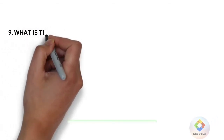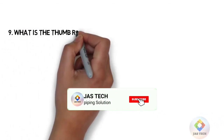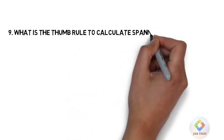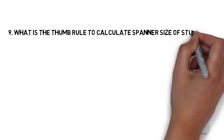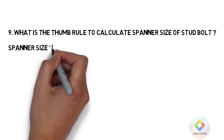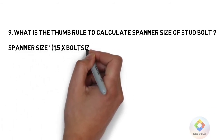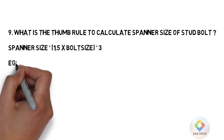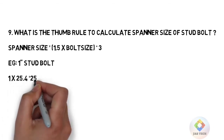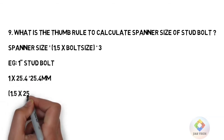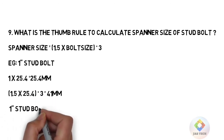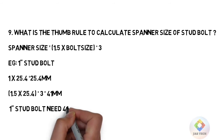Q9: What is the thumb rule to calculate spanner size for a stud bolt? Spanner size = 1.5 × bolt size + 3mm. For example, 1 inch stud bolt: 1 inch × 25.4 = 25.4mm. 1.5 × 25.4 + 3 = approximately 41mm. So a 1 inch stud bolt needs a 41mm spanner.